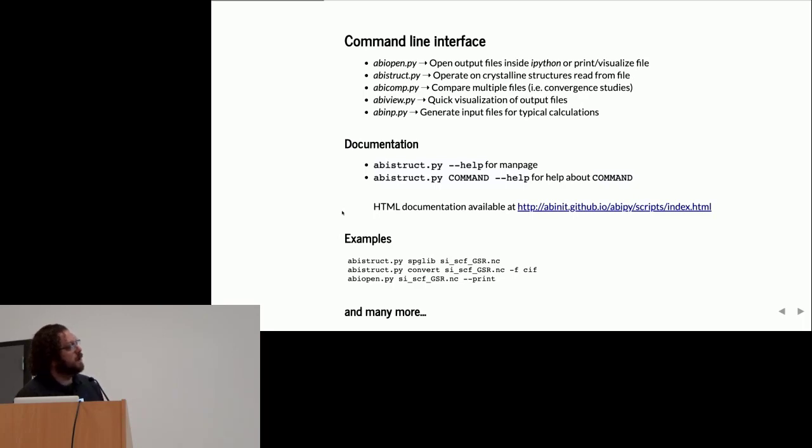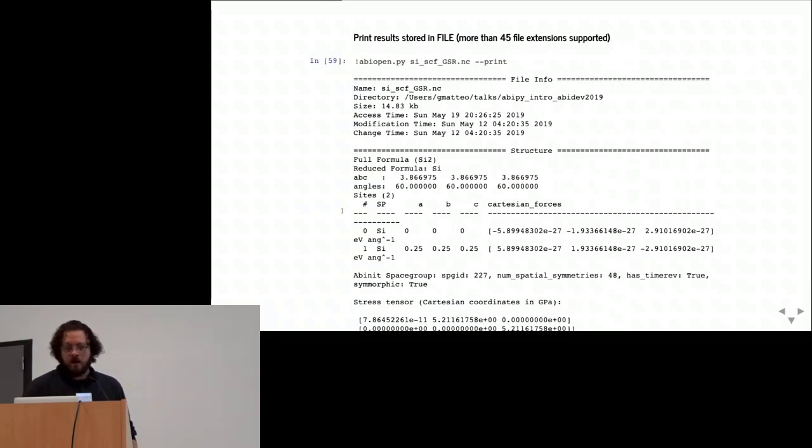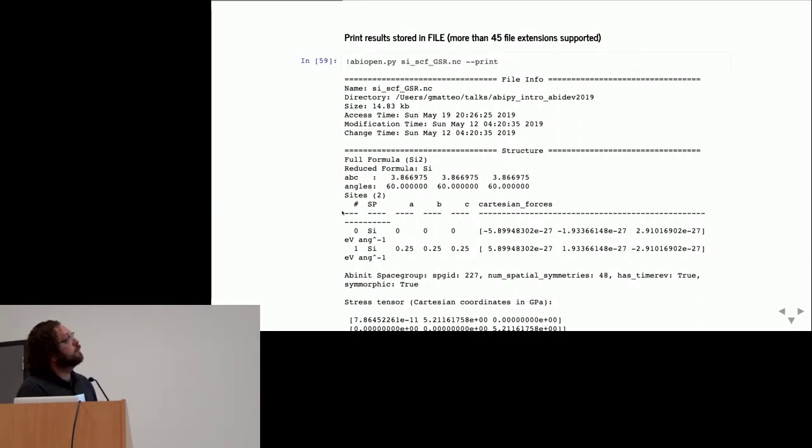Let's start with some basic examples. First of all, let's assume that I have performed some ground state calculation and I want to have a look at the final structure, forces, and pressures. You don't need to use an editor or grep to extract the results. You can just use AbiPy with the print option. When you see the syntax with the exclamation mark, it means that I'm inside the Jupyter notebook executing this command, capturing the output, and displaying it inside the HTML page.